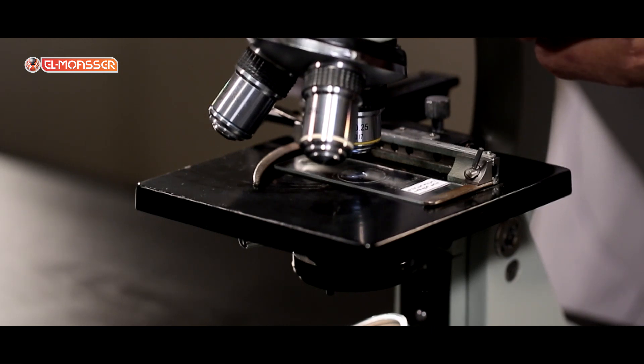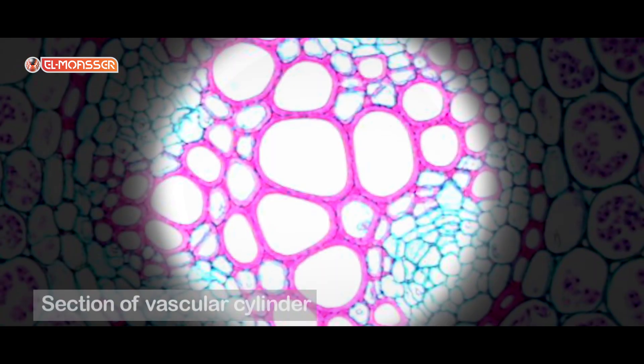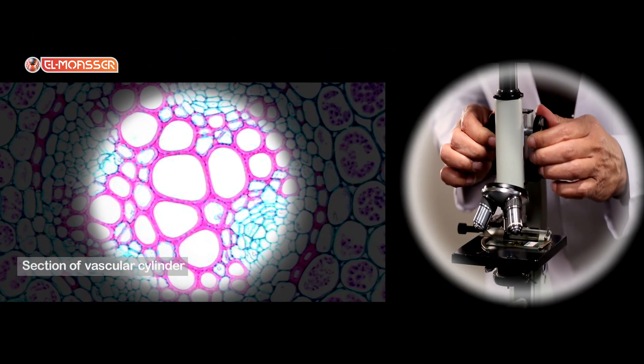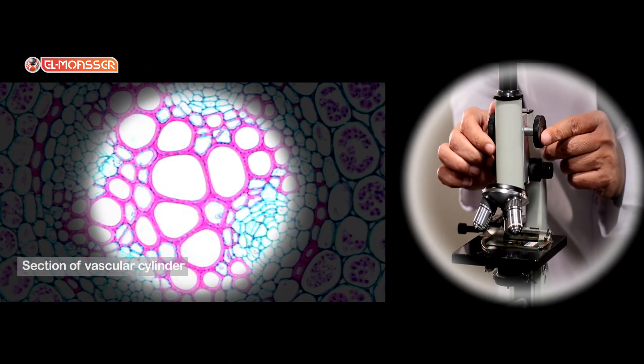Place the second slide on the stage. This is a section of vascular cylinder that contains the phloem tissue and xylem tissue. These are from the types of plant tissues.